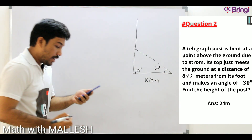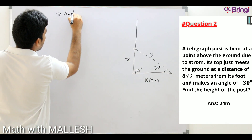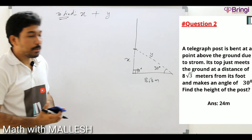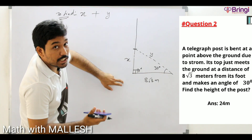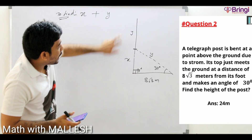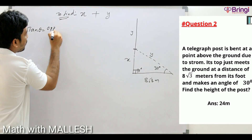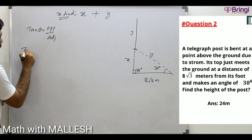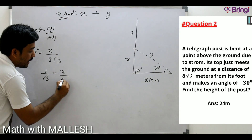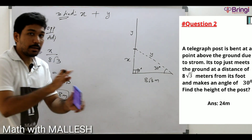The broken top makes an angle of 30 degrees with the ground. Assume the standing part as x and the broken part as y. We need to find x + y, the total height of the tower. Applying tan theta: tan 30° = opposite/adjacent = x/(8√3). Since tan 30° = 1/√3, we get 1/√3 = x/(8√3), so √3 cancels and x = 8 meters.